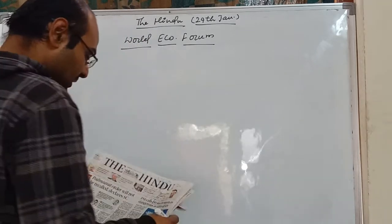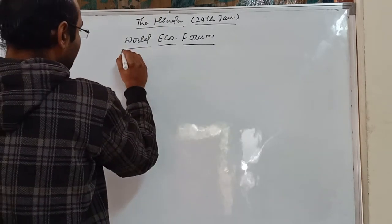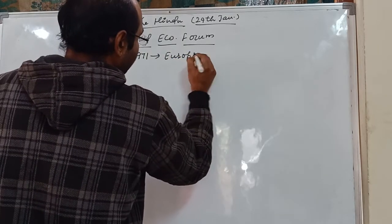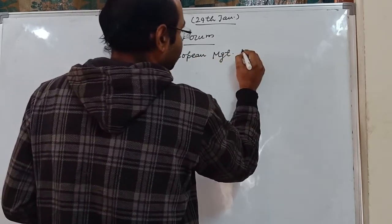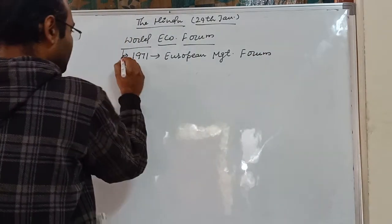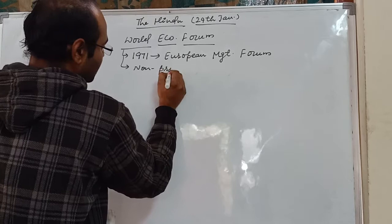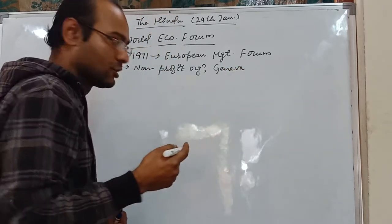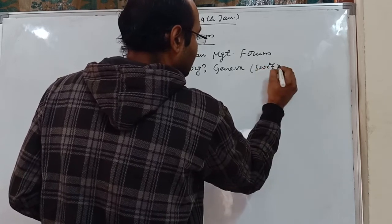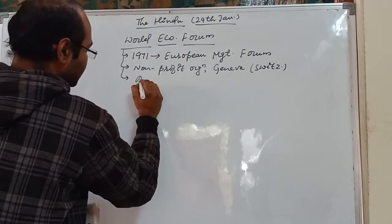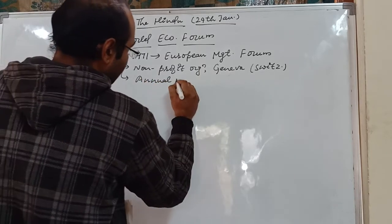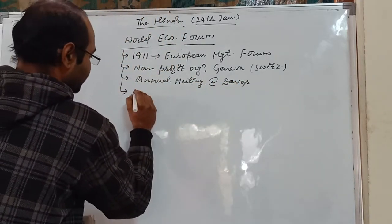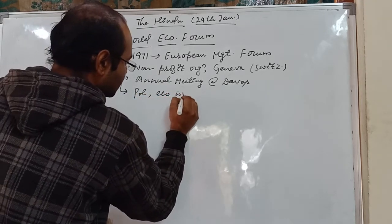So the World Economic Forum was established in 1971 as the European Management Forum. It is a non-profit organization based in Geneva, although it has regional offices in New York and Beijing. Every year there is an annual meeting at Davos.